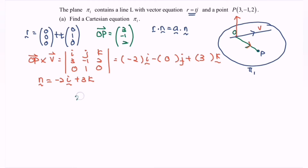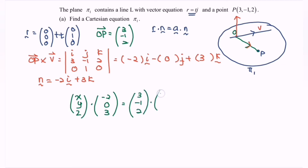Next, substitute r as (x, y, z) dotted with n = (-2, 0, 3), equals a dot n. We can substitute point P (3, -1, 2) or point (0, 0, 0). Selecting point P (3, -1, 2) and dotting with normal (-2, 0, 3) gives the vector equation of plane pi 1. Expanding into Cartesian form: -2x + 3z = 0. That is the Cartesian equation and the vector equation of plane pi 1.